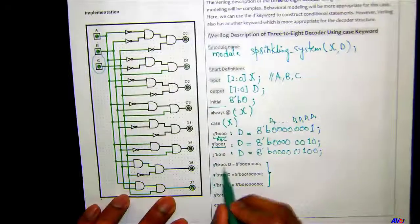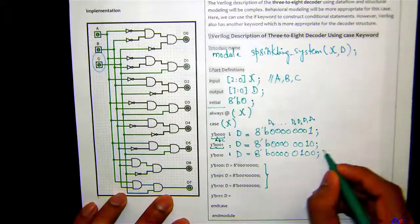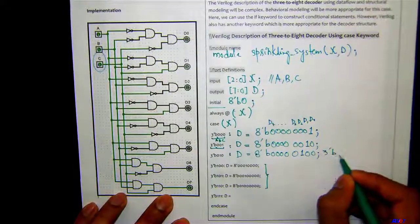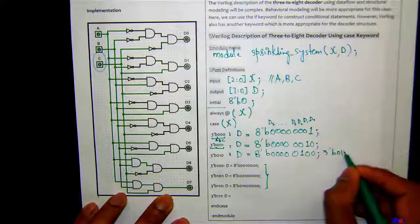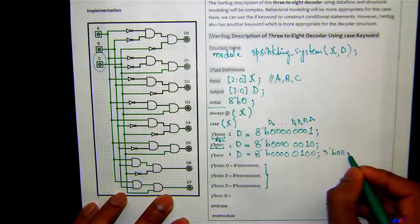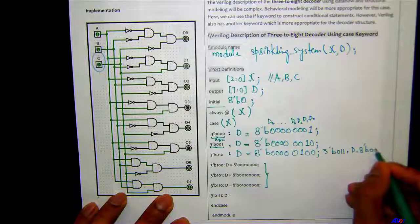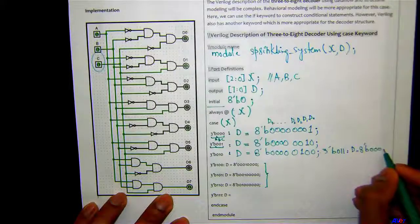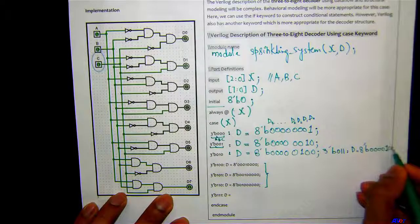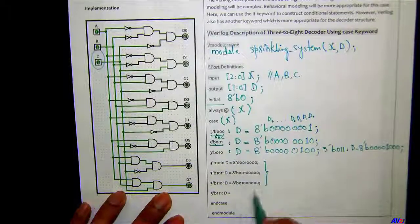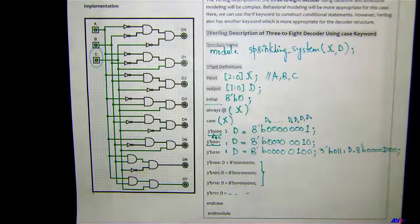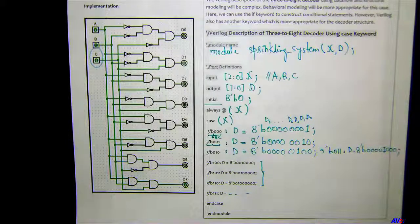There's one missing case for three, which is 0-1-1, so D equals 8'b00001000. Then we write endcase and endmodule. You can think of this kind of example, build upon it, and this could be a final project.